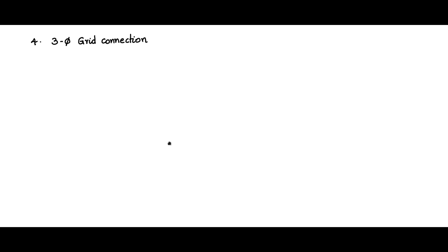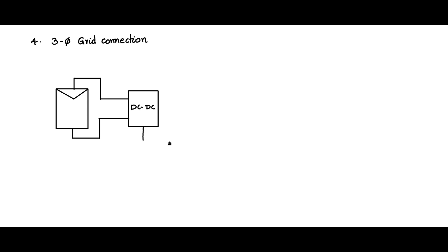The PV module can also be connected to a three-phase grid. Let us look at the topology for three-phase grid connection. We have a PV module whose output is connected to a DC-DC converter. The DC-DC converter has a control input which modulates the input impedance, and its output is connected to a link capacitor — the bus capacitance — from which we feed a three-phase inverter.